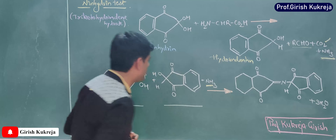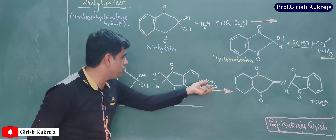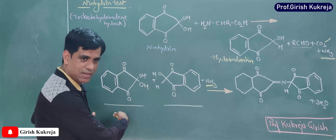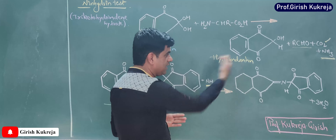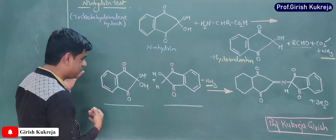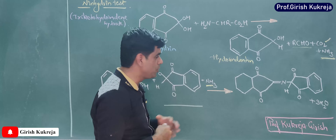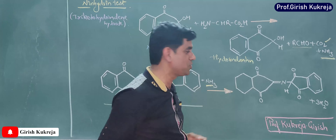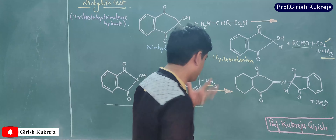This liberated ammonia is the key reactant here. The same ammonia is going to react with ninhydrin again. Another ninhydrin molecule, along with the reduced form of ninhydrin — hydrindantin — and this ammonia together are going to form the colored product, the purple colored complex.